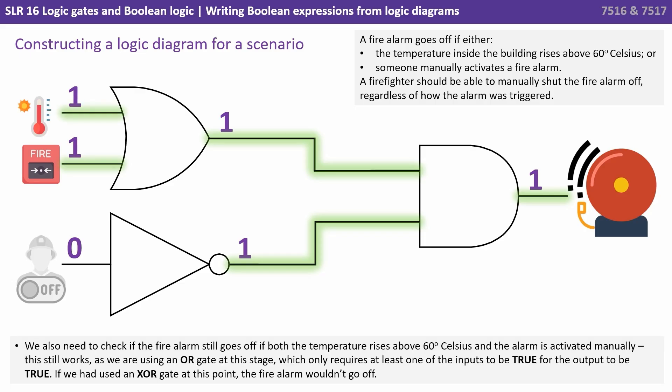We also need to check if the alarm will still go off if both the temperature rises above 60 and the alarm is activated manually and this still works as we're using an OR gate at this stage which only requires at least one of the inputs to be true for the output to be true.